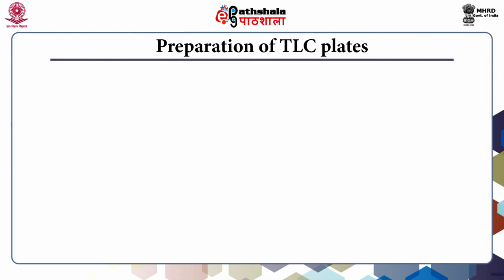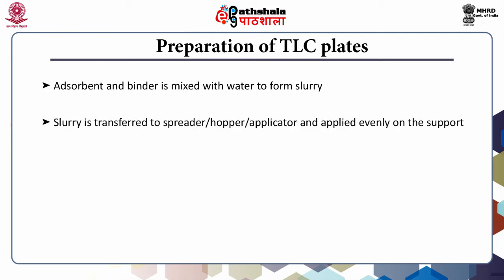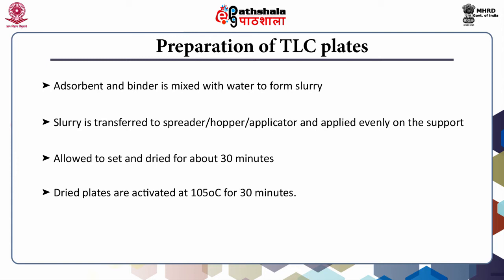For preparation of a TLC plate, the adsorbent — silica or alumina — along with a binder is mixed with water to form a slurry. The slurry is transferred to a spreader or applicator and applied evenly on the support. The applied slurry is allowed to set without disturbance and dried for about 30 minutes, then activated at 105°C for 30 minutes. Commercially manufactured pre-coated TLC plates are also available. A fluorescent indicator may be added in the adsorbent to make separated spots visible under UV light at 254 nm; such plates are denoted as silica gel GF.